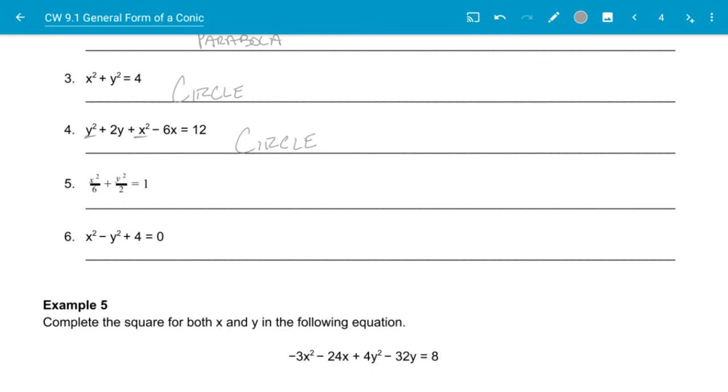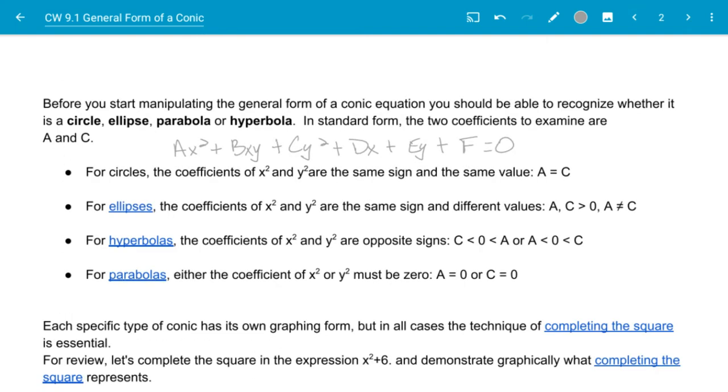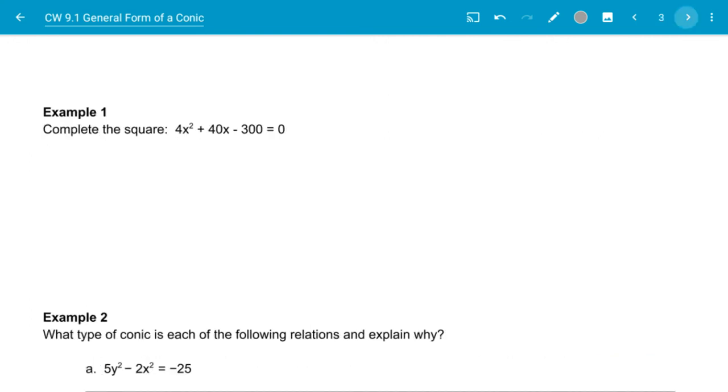For number five, I have x squared divided by 6 and y squared divided by 2, which my coefficient would be 1/6 x squared plus 1/2 y squared is equal to 1. So here I have different coefficients but the same sign. So this is going to be an ellipse. And just as a review again, for an ellipse, the coefficients of x squared and y squared are the same sign but different values. If it's the same value, then it is a circle.